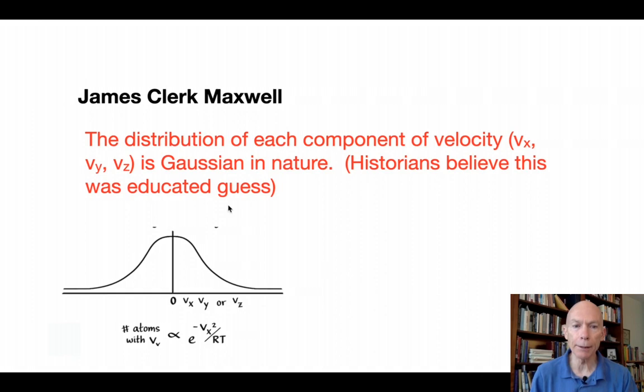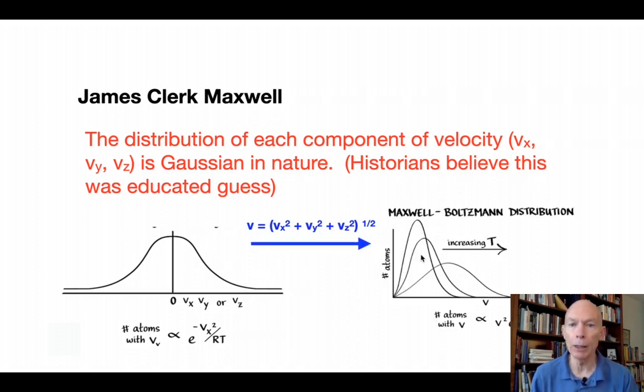If you take this assumption for each one of these component velocities, and you look at total velocity here as being the sum of the X, Y, and Z components, you can derive the Maxwell Boltzmann distribution of the gas molecules. Number of atoms as a function of the velocity of the atoms, and here are the flame-shaped curves. I won't get into the mathematics now.